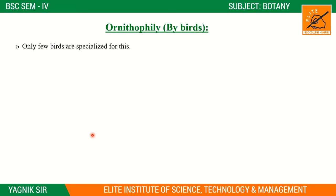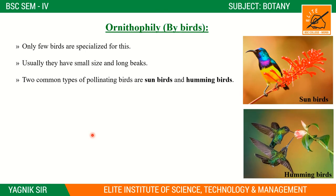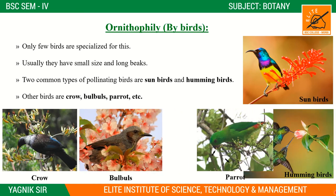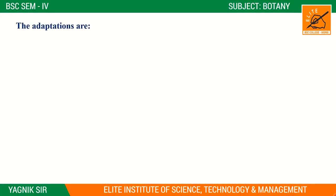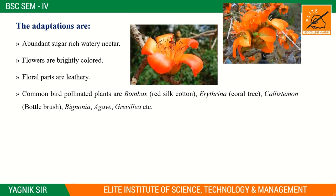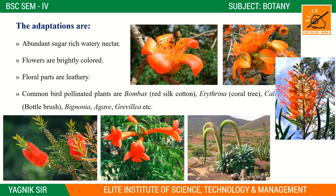Only a few birds specialize in pollination — they usually have a small size and a long beak. Common pollinating birds include sunbirds and hummingbirds, as well as crows, bulbuls, and parrots. Adaptations include sugar-rich nectar, bright colored flowers, and leathery floral parts. Examples of bird-pollinated plants include Bombax, Erythrina, Callistemon, Bignonia, Agave, and Grevillea.